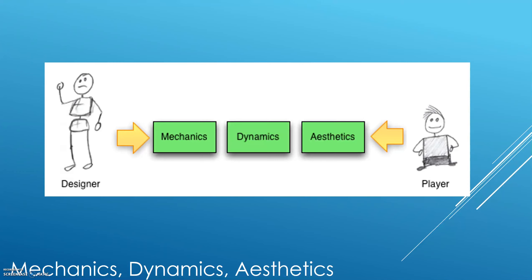So how does this help with game design? Here's an example: start with an aesthetic from the list — Submission — I want to create a game someone plays almost mindlessly to pass the time. Choose a dynamic: Territory Acquisition. Now create the mechanics, which are easier to define now that we have an idea of the type of game we're creating. Another example: start with a dynamic — Race to the End — then choose an aesthetic: Sensation, a game of physical exertion. When creating the mechanics, I might choose a board the player physically walks around, or include challenges requiring a physical activity. That's the MDA framework and how it helps in game design.